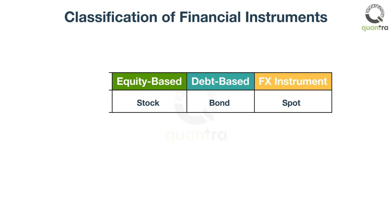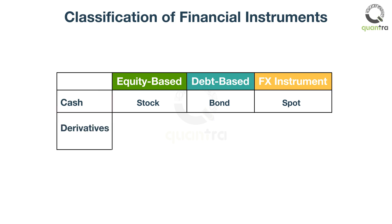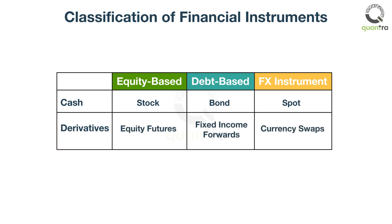Financial instruments can also be classified as either cash instruments or derivative instruments. The values of cash instruments are directly influenced and determined by the investor's sentiments, and these securities are easily transferable. On the other hand, derivative instruments, as the name suggests, derive their value from some underlying source, such as stocks, interest rates, etc. These can be traded over the counter or on an exchange. Examples of cash and derivative instruments are shown on the screen for each category.